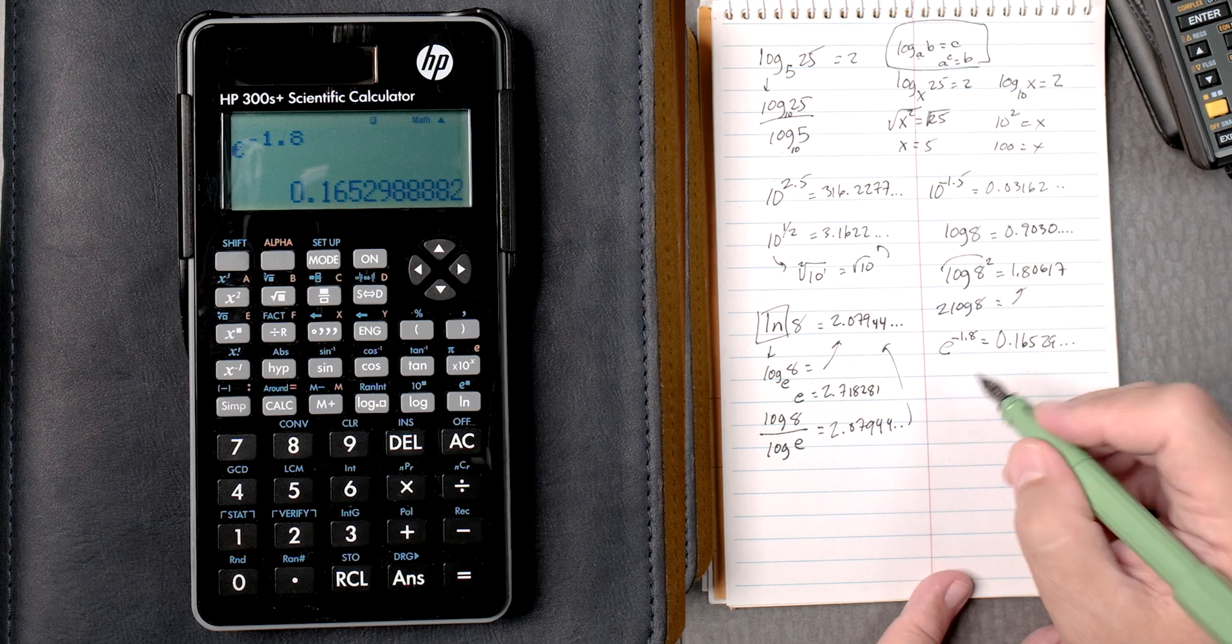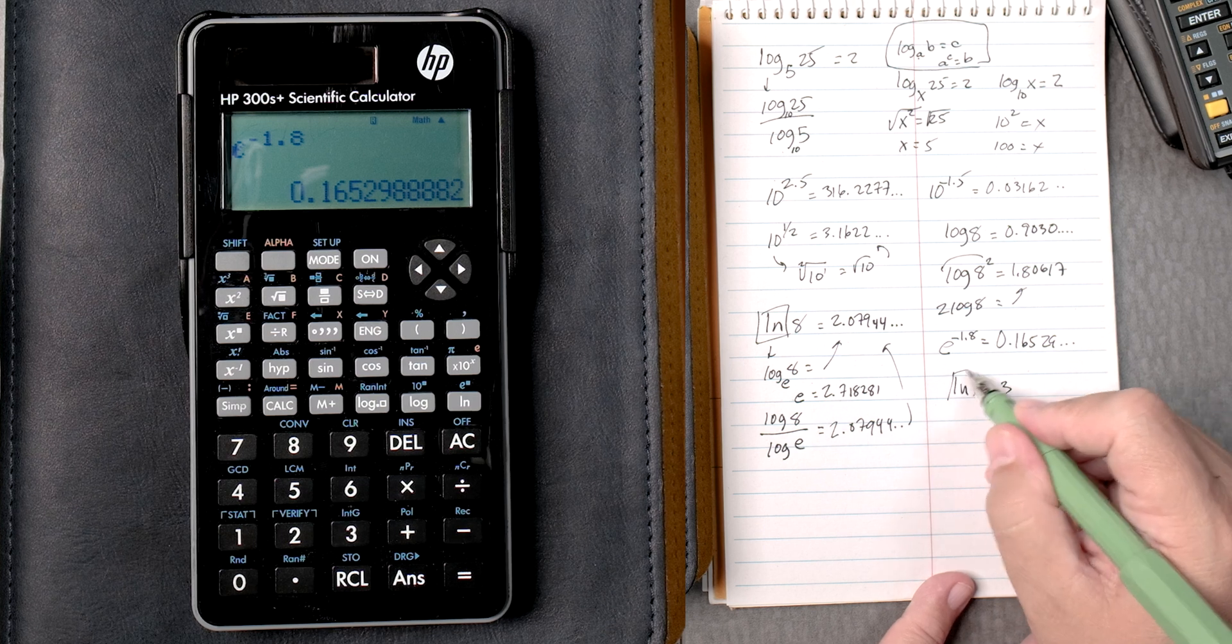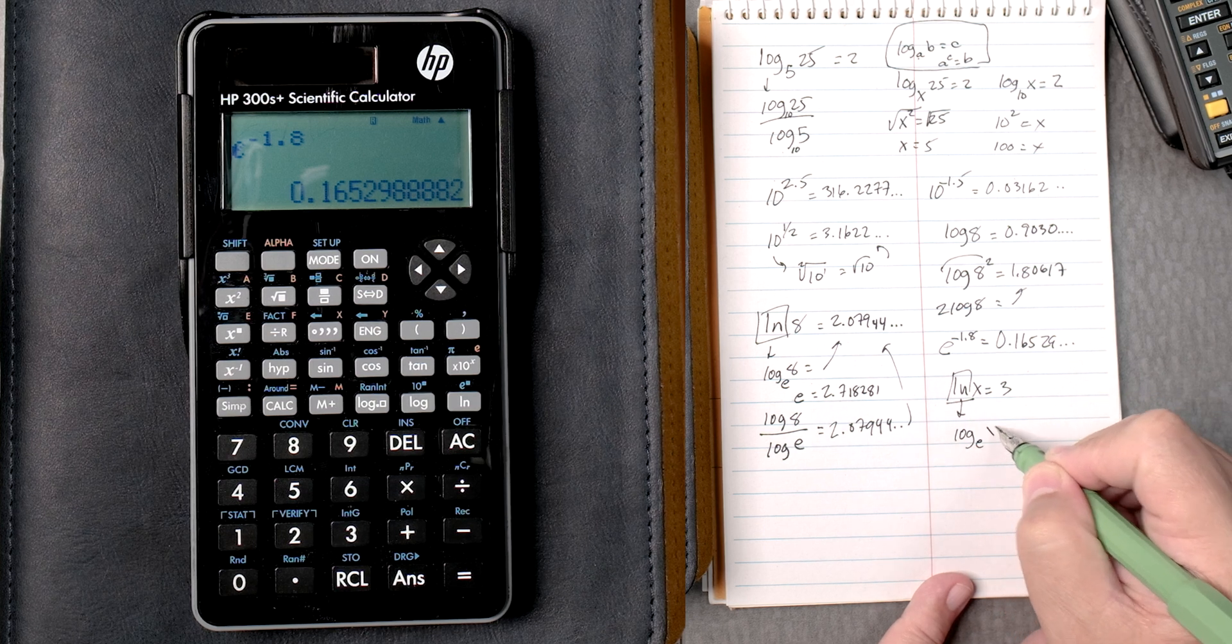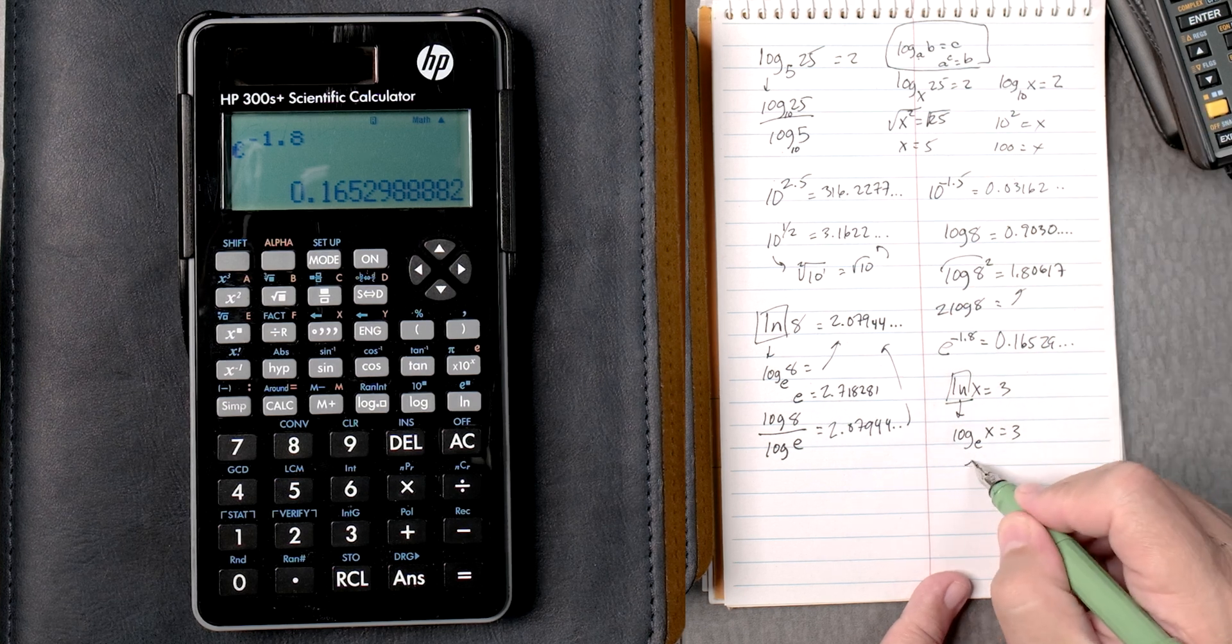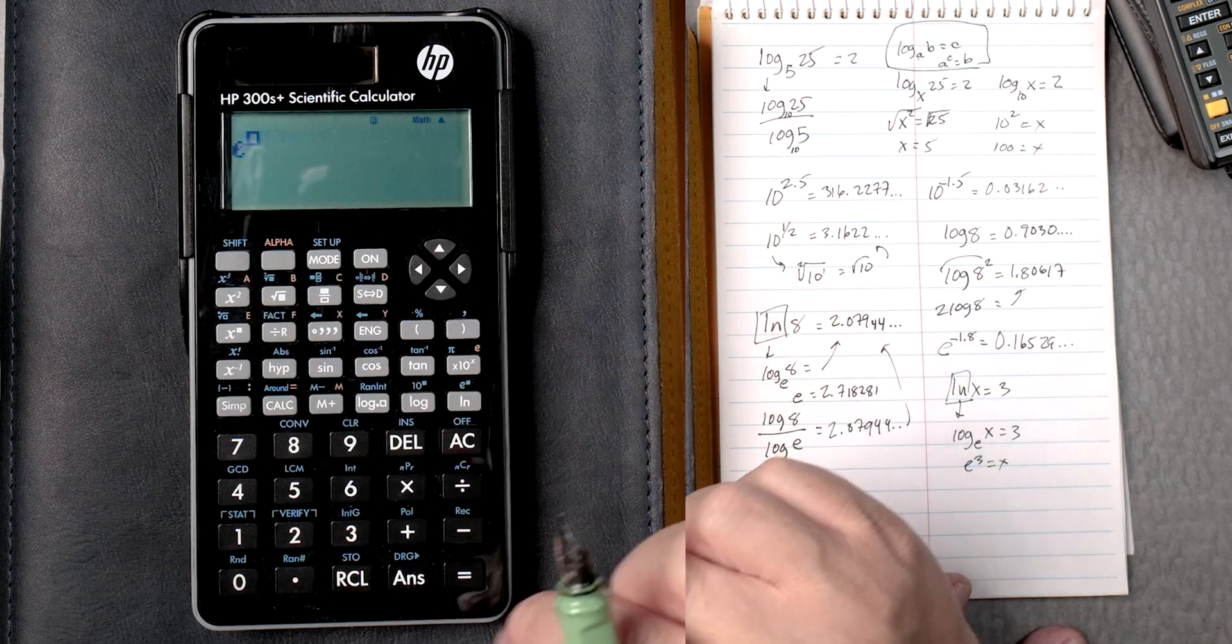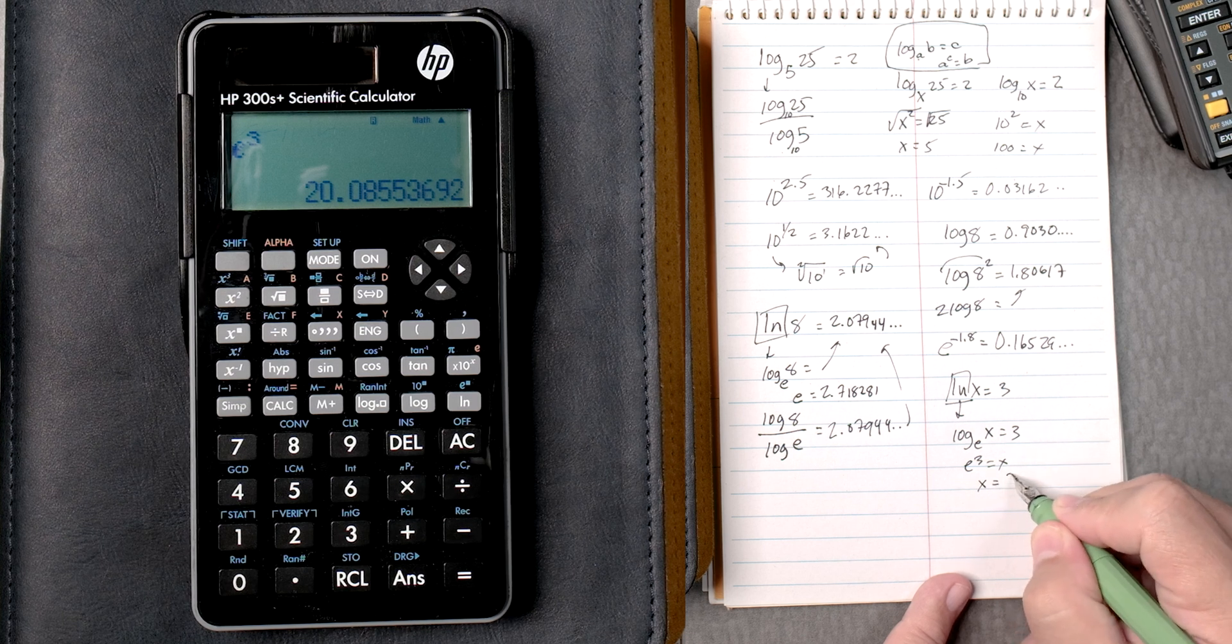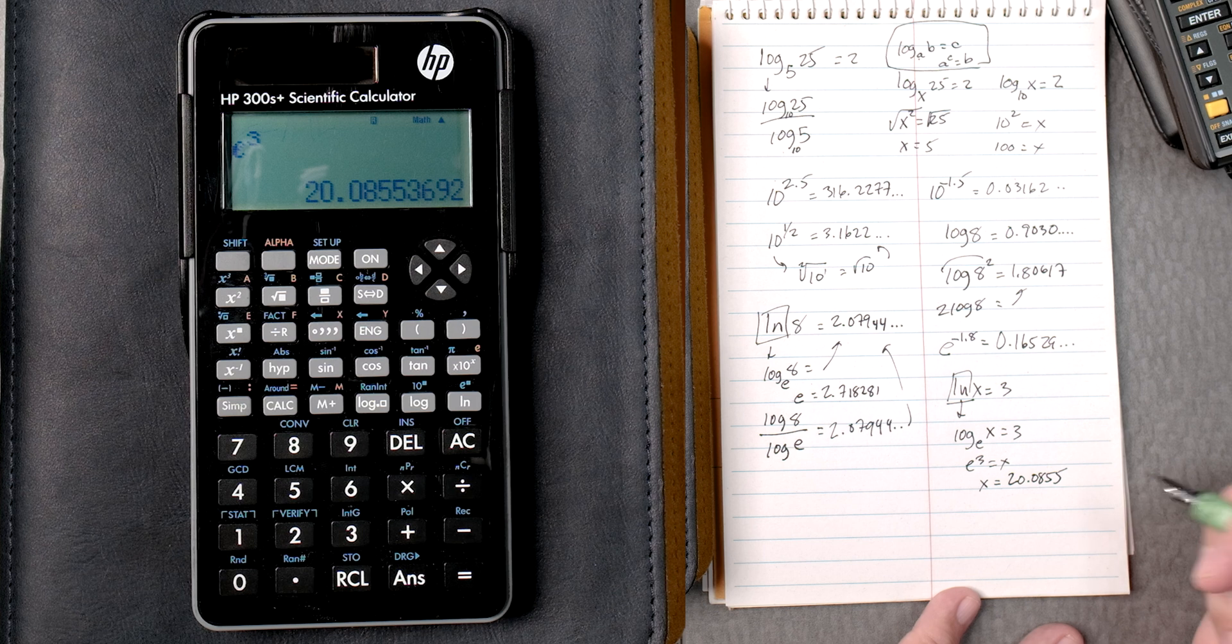And then natural log of x equals 3. Take this natural log, it's the log of base e, x equals 3. Based on this rule on the top, e to the third equals x, and e to the third, shift, natural log, we type in the 3, we press equals, x equals 20.0855. That's the answer.